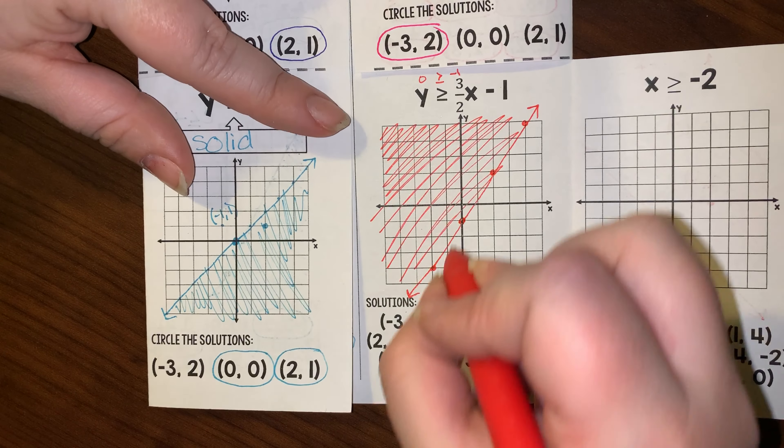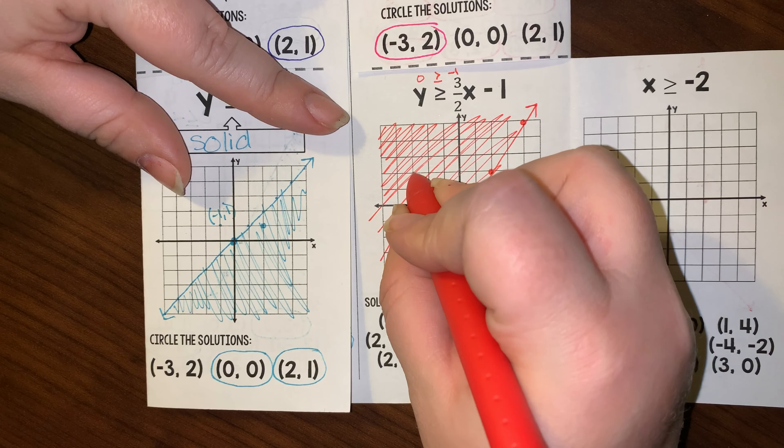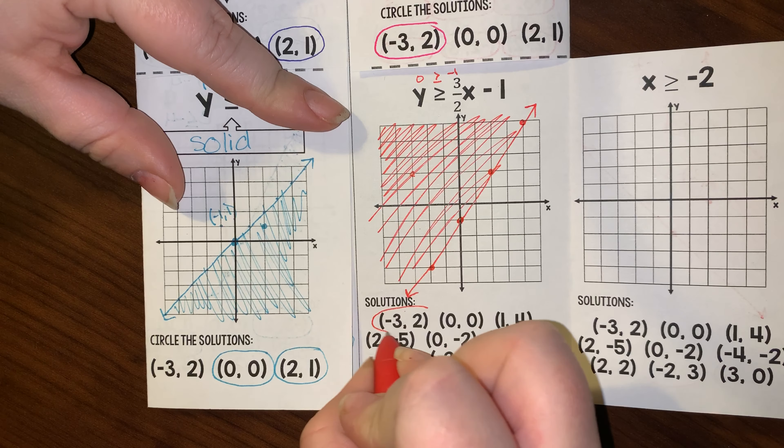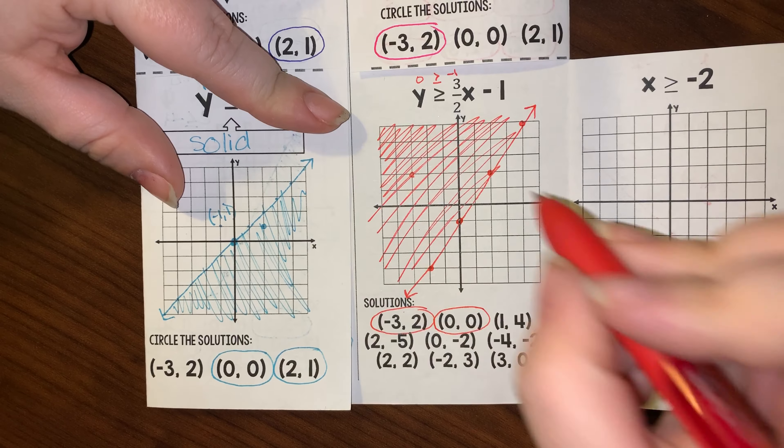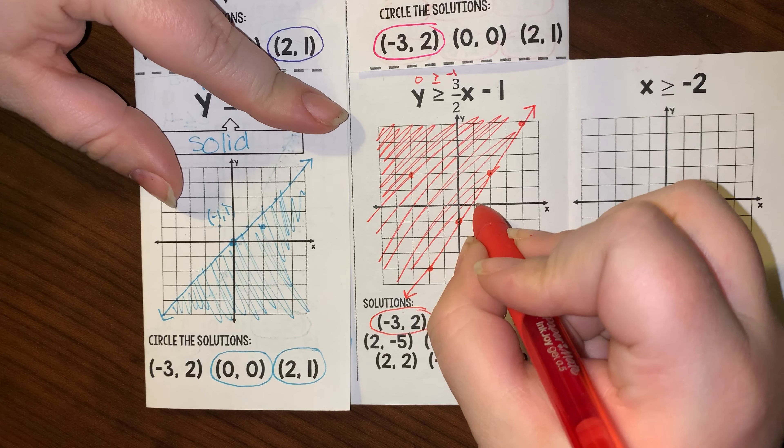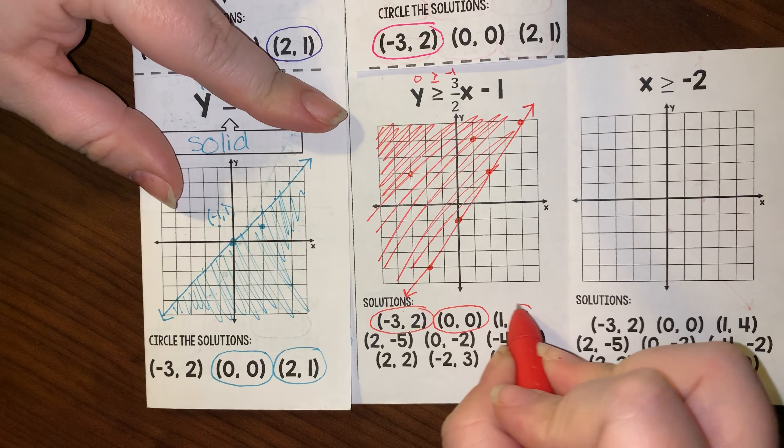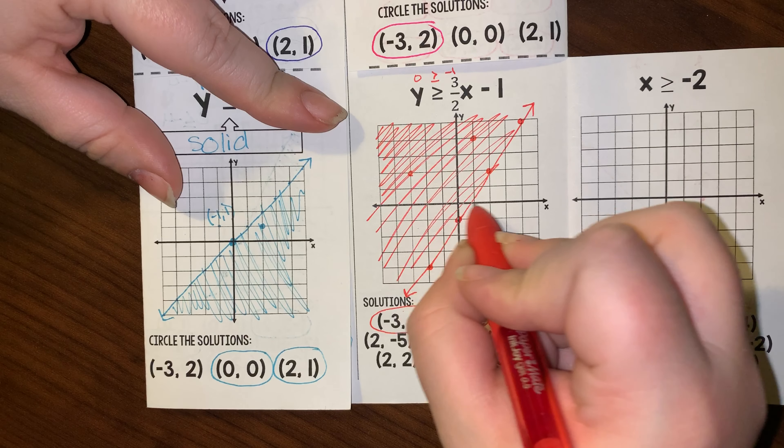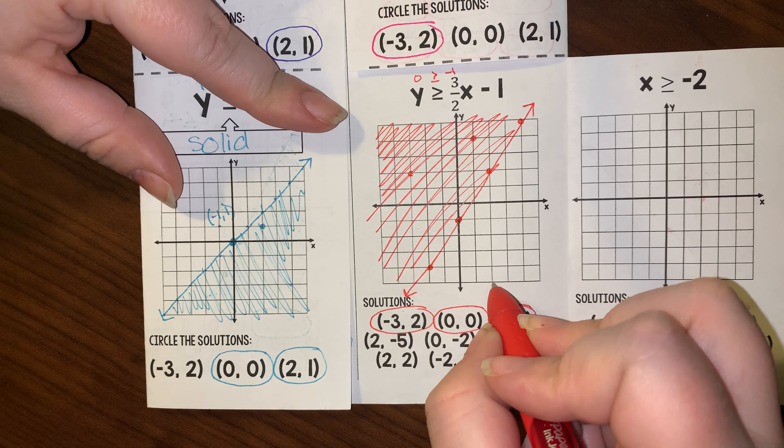Possible solutions: Negative 3, 2 is within that shaded region, so that one works. We already determined that 0, 0 works. 1, 4 works. 2, negative 5 does not. 0, negative 2 does not.